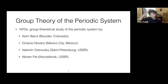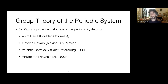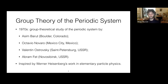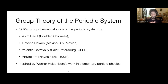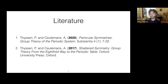In the early 70s of the previous century, several research groups almost simultaneously embarked on a group-theoretical rather than quantum mechanical study of the periodic system. The pioneers included Asim Barut from Boulder, Colorado; Octavio Novaro from Mexico City; Valentin Ostrowski from St. Petersburg; and Abram Fett from Novosibirsk. Their hope was that symmetry might provide a key to the system's secrets. They were all inspired by the work of German physicist Werner Heisenberg in elementary particle physics.